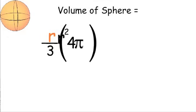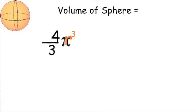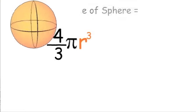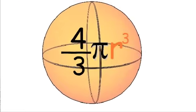Now we combine the r's together to get r cubed and now we simply rearrange the equation to get 4 over 3 pi r cubed.